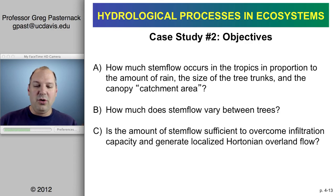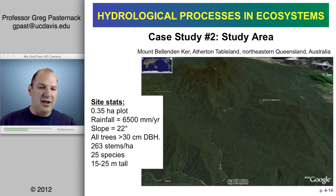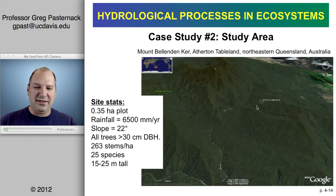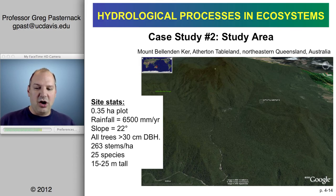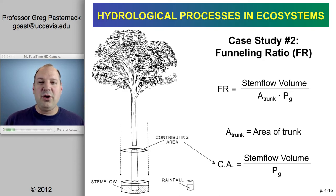This second study is still the Atherton Tablelands, but now on the escarpment. You can see the transition: in the far upper right is the altered land use, then the escarpment with a beautiful mountain range, and then heading up into the tropics. The study plot is relatively small with 6.5 meters of rain per year — that's a lot of rain — a slope of 22%, so very steep, with large trees but relatively low tree density.